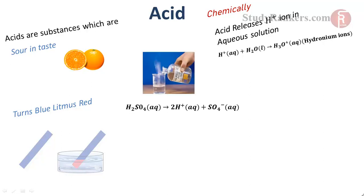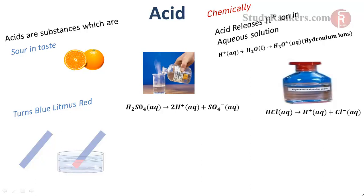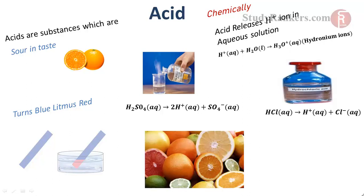Here are a few examples of acids. Sulfuric acid H₂SO₄, which is an important chemical substance, dissociates into its ions in water. Similarly, hydrochloric acid HCl dissociates into H⁺ and Cl⁻. This is the acid we use as toilet cleaner. Acids are found in sour fruits like oranges, crabs, as well as in soft drinks.